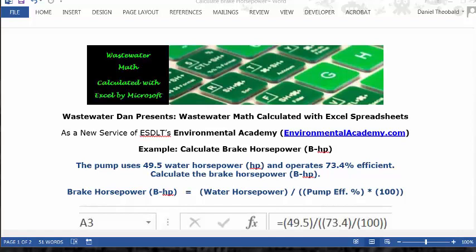this way: Brake horsepower equals water horsepower divided by pump efficiency percent times 100. That's essentially the decimal equivalent of the percentage described.